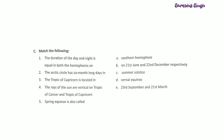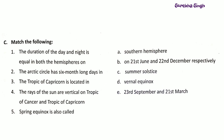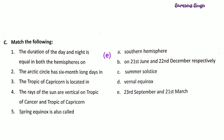Question C: Match the following. 1. The duration of the day and night is equal in both the hemispheres — Option E: 23rd September and 21st March. 2. The Arctic Circle has 6 months long days in — Option C: Summer Solstice.